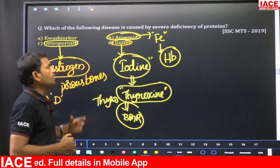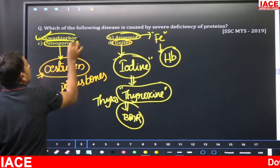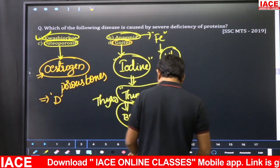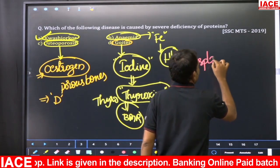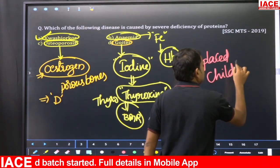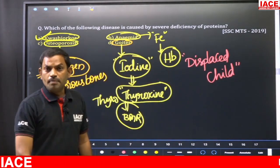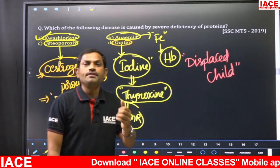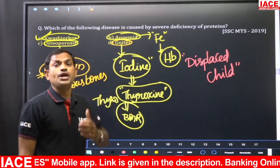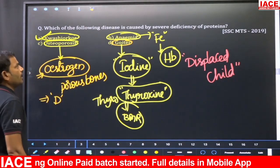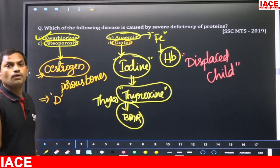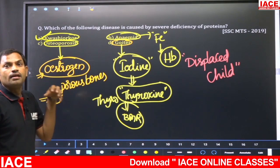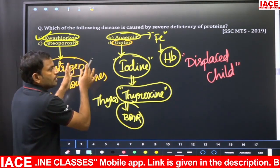The answer is option A — Kwashiorkor. In African words, Kwashiorkor means 'displaced child.' When a child is given alternate food in place of mother's milk, there is a deficiency of protein, leading to protein malnutrition. This shortage of proteins and essential amino acids leads to Kwashiorkor. Remember, it is a nutritional disease — not caused by any microorganism.